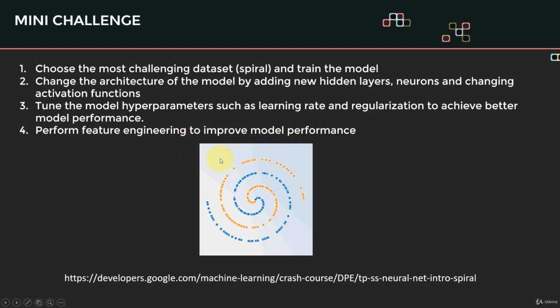Finally, perform some feature engineering to improve model performance. Instead of feeding in the inputs as is, maybe you can feed in the input squared, or sum up the two inputs together, or add x squared plus y squared. There are many options. Please go ahead and pause the video, attempt to solve the mini challenge, and I will be back with a solution. Best of luck!